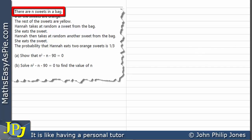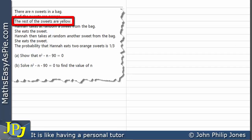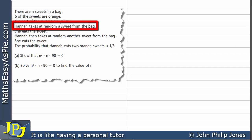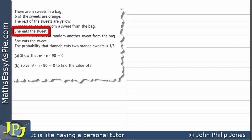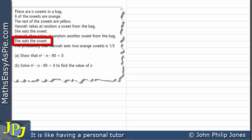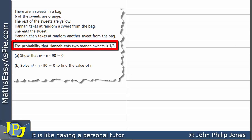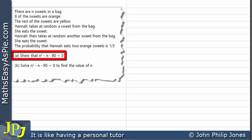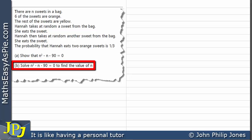There are N sweets in a bag. Six of the sweets are orange; the rest of the sweets are yellow. Hannah takes at random a sweet from the bag and eats it. Hannah then takes at random another sweet from the bag and eats it. The probability that Hannah eats two orange sweets is one third. Show that N squared minus N minus 90 equals zero. Also, solve N squared minus N minus 90 equals zero to find the value of N.